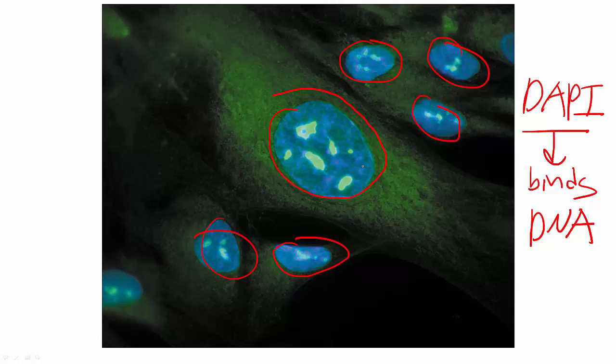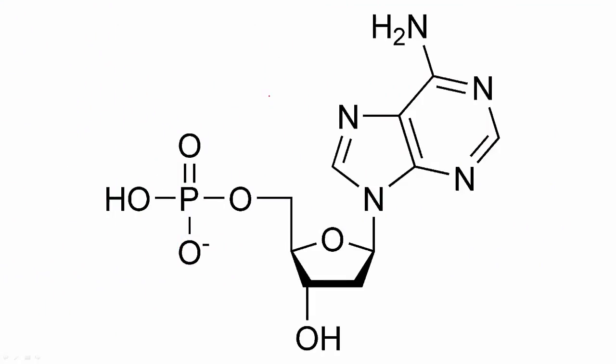Now we've talked about the importance of DNA and where it's found, but what is it made out of? What are its components? So here we have a subunit of DNA, a nucleotide. Now it is made out of three main components.